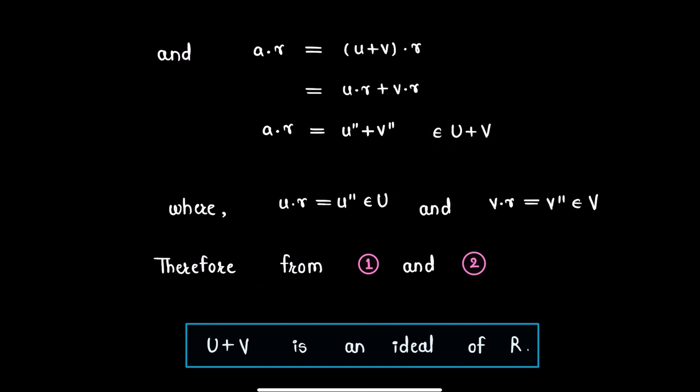Therefore from conditions 1 and 2, and following the definition of an ideal, U plus V is an ideal of ring R. This proves our result.